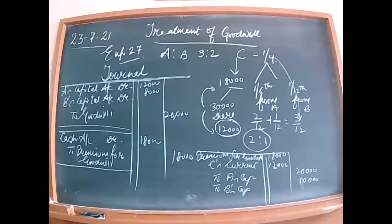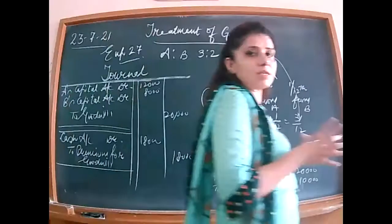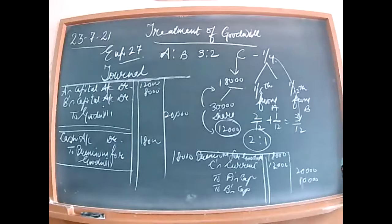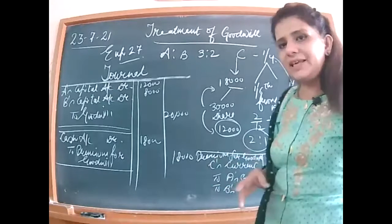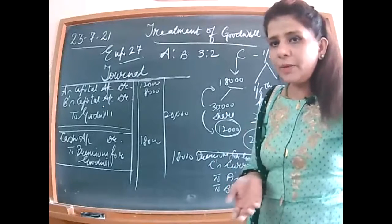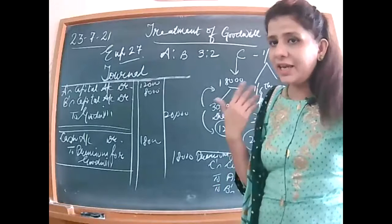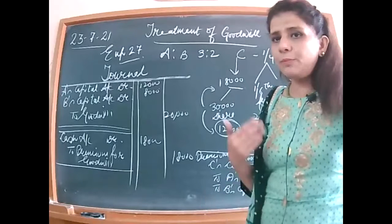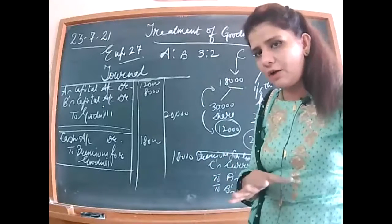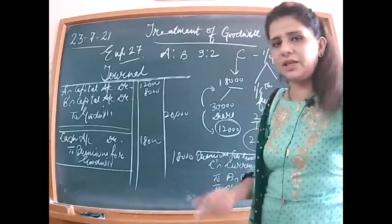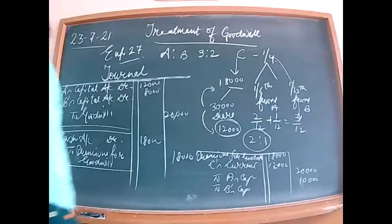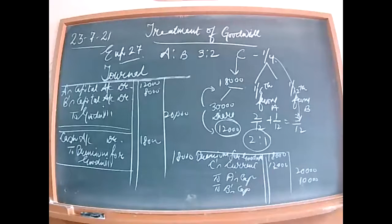Matching with the book: the new concept here is that the new partner brings only part of his share of goodwill in cash, and for the remaining amount his current account is debited. If the question explicitly states the shortfall is debited to C's current account, we follow it. That completes illustration 27. Now read illustration 28.